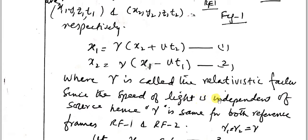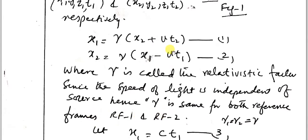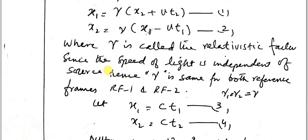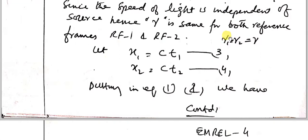Since the speed of light is independent of the source, gamma is the same for both reference frames Rf1 and Rf2. This resembles a Galilean transformation equation, but Lorentz considered that classical laws do not hold in relativistic reference frames, so he introduced the factor gamma. Gamma is the same in both frames because the speed of light is the same, so gamma1 equals gamma2 equals gamma.